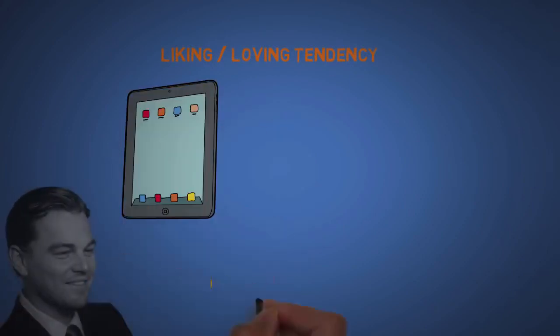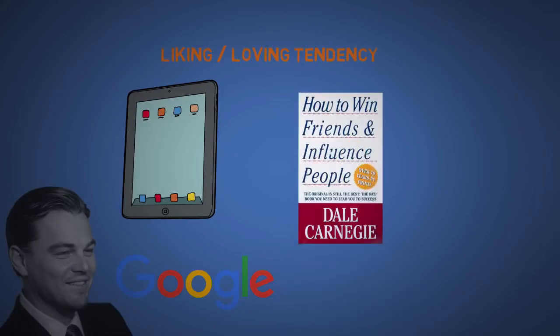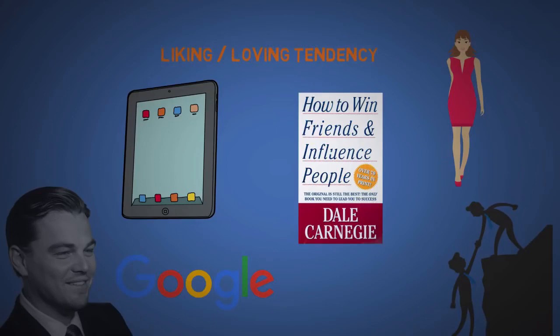The second is liking slash loving tendency. We tend to ignore the faults of other people, products, or companies that we admire. One of my favorite books on this subject is How to Win Friends and Influence People by Dale Carnegie. But in general, just be nice, look sexy, and people will be hypnotized by you.